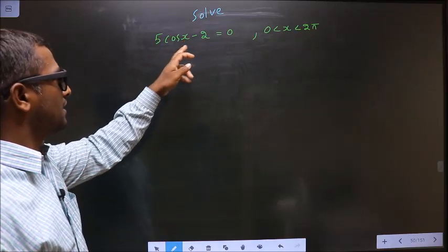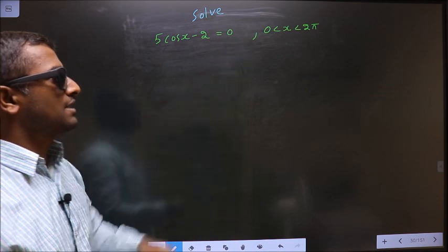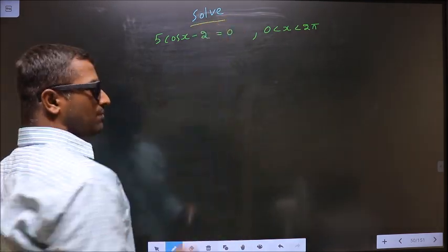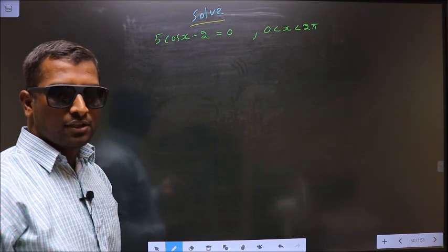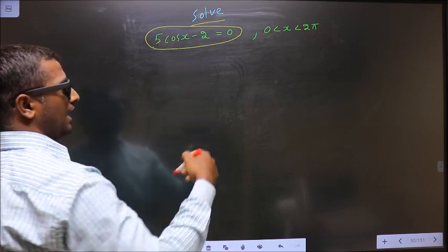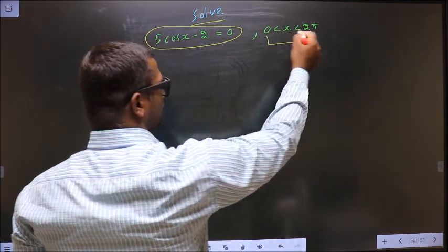Solve 5 cos x minus 2 equal to 0, where x lies between 0 to 2π. They told you to solve, so you should find the values for x satisfying this equation and it should lie in this interval 0 to 2π.